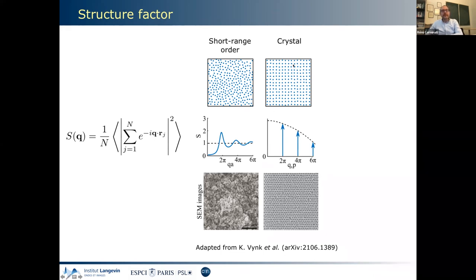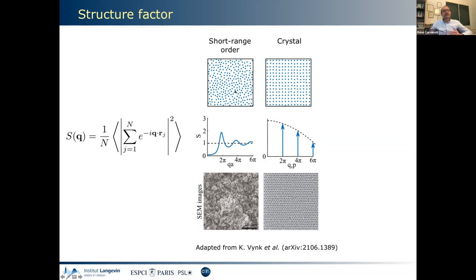For a crystal — a purely periodic medium — the structure factor gives delta-function peaks, responsible for Bragg peaks in scattering. For a completely random distribution of points, S(q) equals one for any value of q. In the presence of partial order, you get something like the blue curve here: a signature of correlations between a particle and its neighboring particles. This quantity directly characterizes the geometrical properties of your scattering medium.